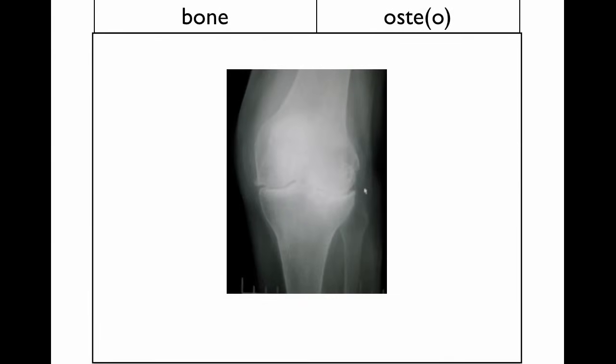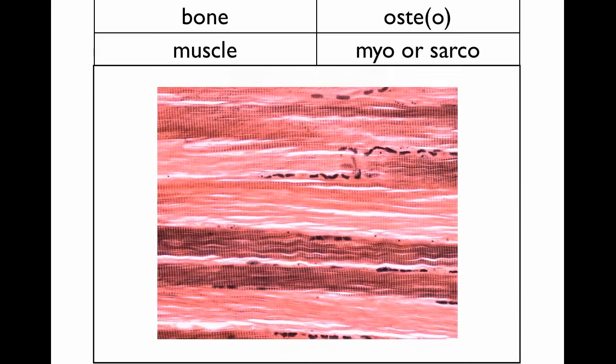Something you'll see every time we talk about bone and the skeletal system is osteo. When we're talking about cell parts, conditions — things like osteoarthritis — you're going to see osteo somewhere in there. Osteocyte, in fact, is the name of a bone cell.